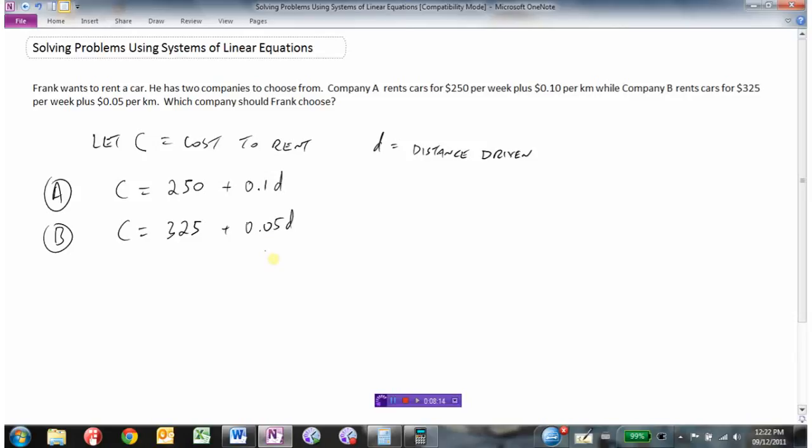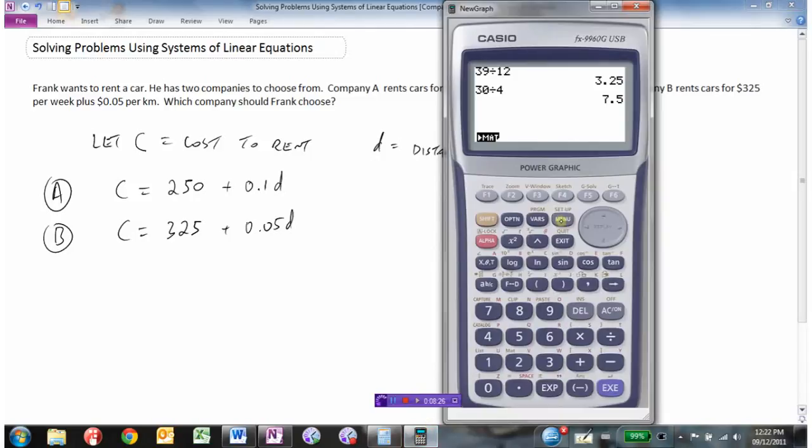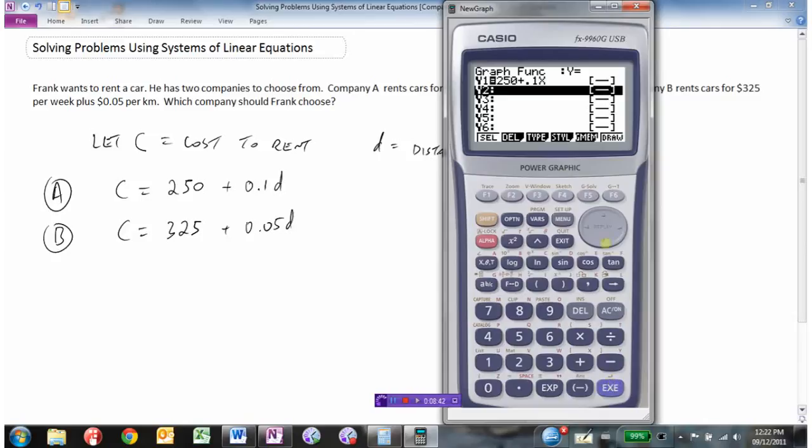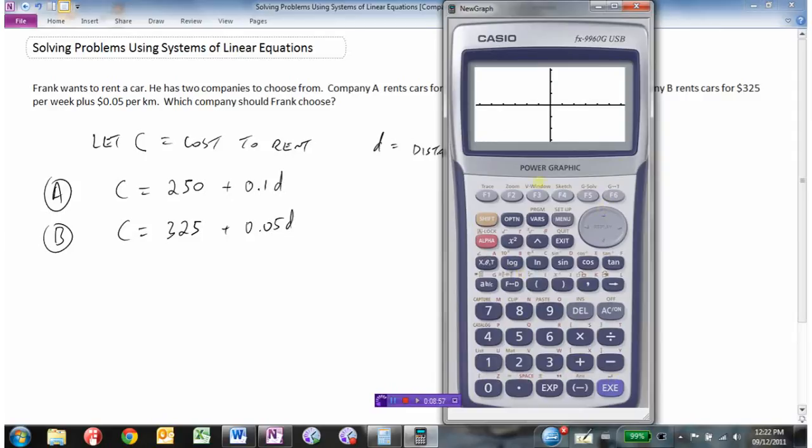We have to solve this equation. This one's different and we already have C equals or Y equals form. So if we had a graphing calculator, we could simply enter the cost in. Cost equals 250 plus 0.1 times D. The calculator uses Y and X but we know C is like the Y value and D is like the X value. The other one's 325 plus 0.05 times D or X. Now we're going to draw them.